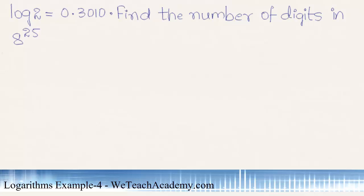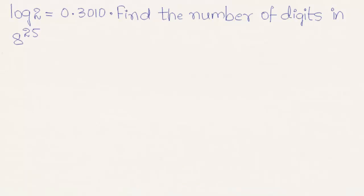Welcome to vdcheacademy.com. In this presentation we are going to solve a problem on logarithms. The given problem is: log 2 is equal to 0.3010 — find the number of digits in 8 raised to the power 25.